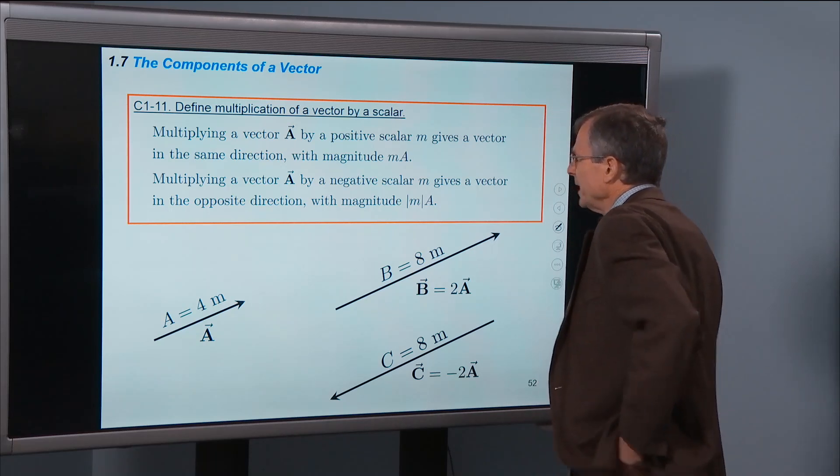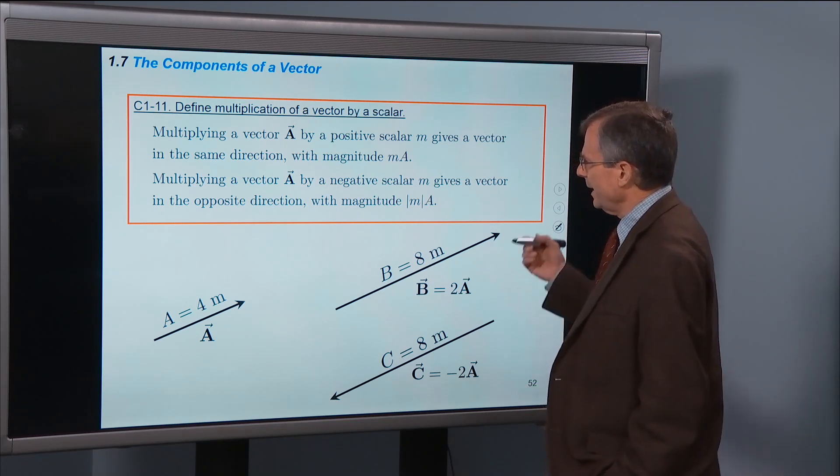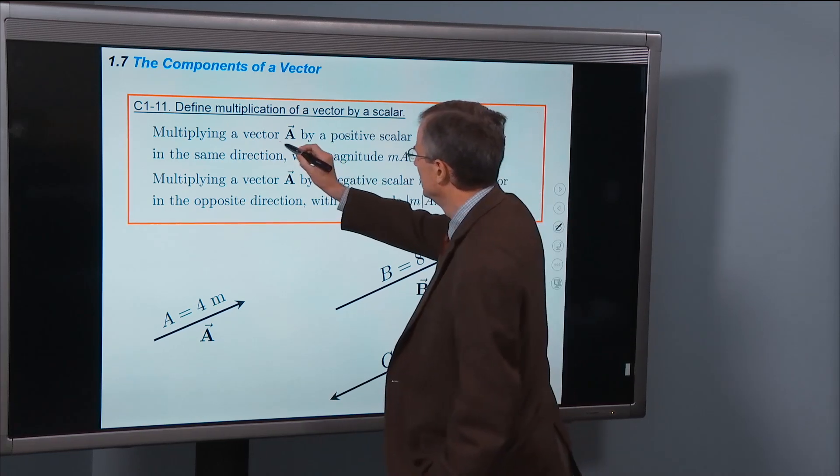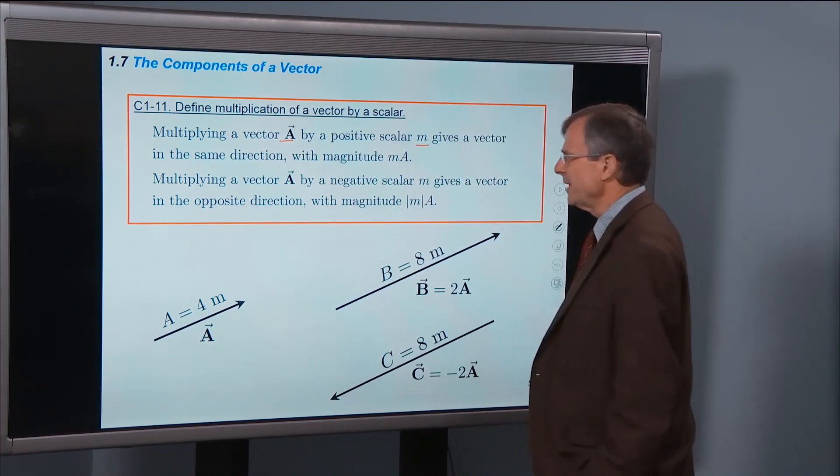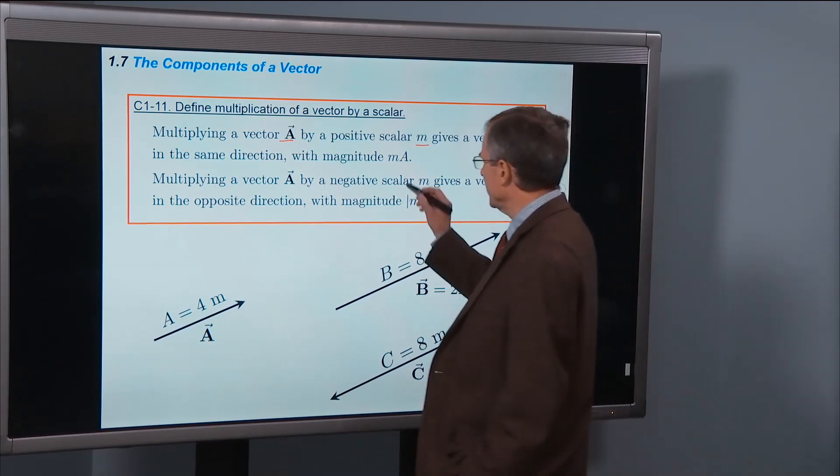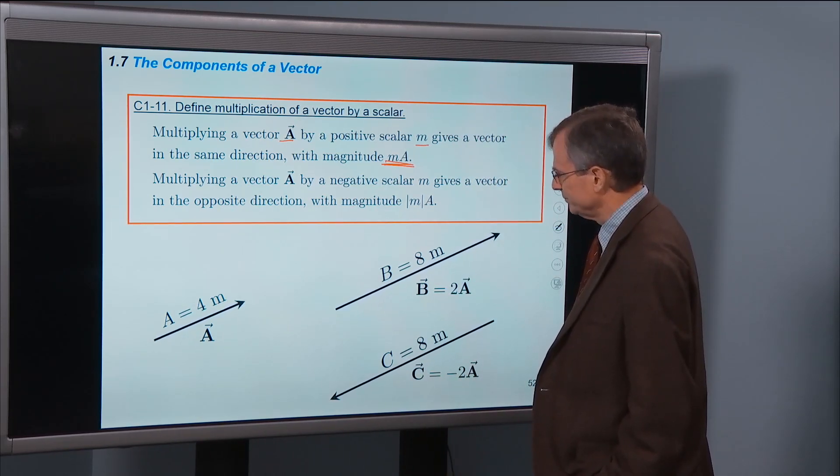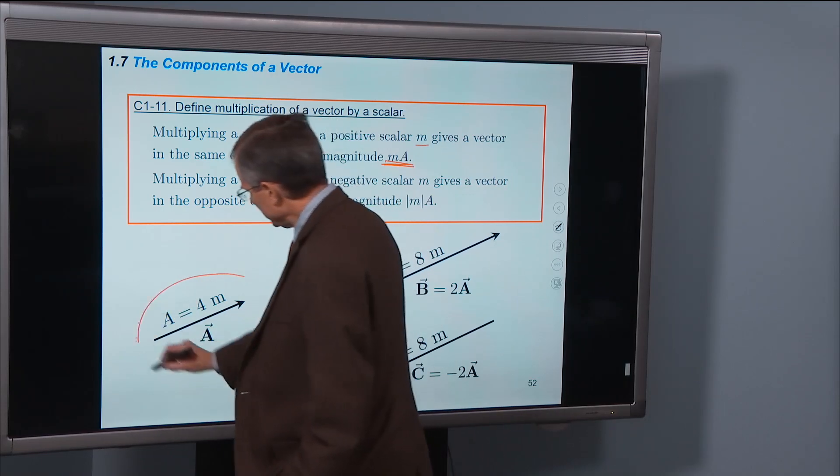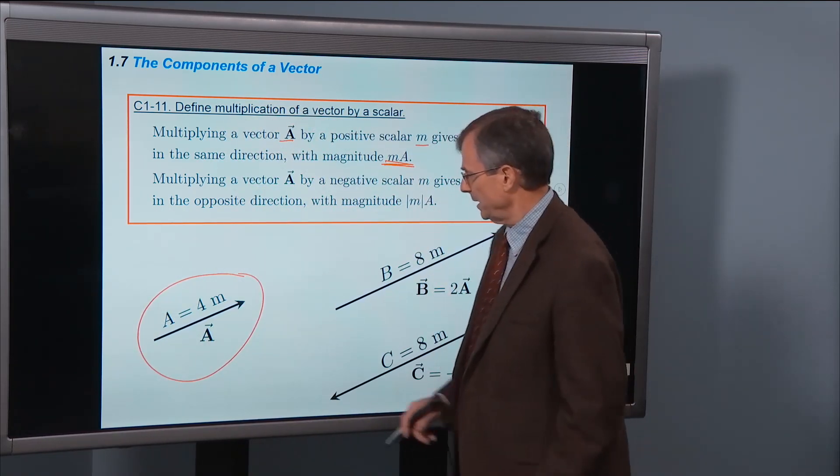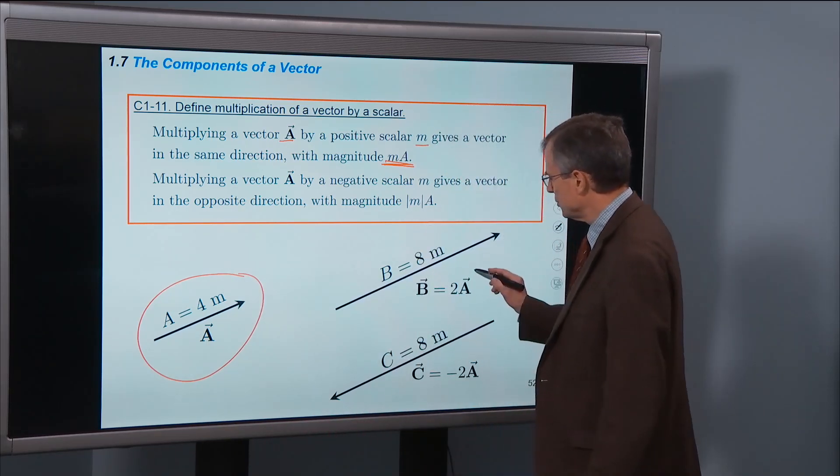Let's define the multiplication of a vector by a scalar. Multiplying a vector A by a positive scalar m gives a vector that is in the same direction and its magnitude is m times A. So for example, we've got a vector A here, points a little bit up and to the right. Its magnitude is 4 meters.